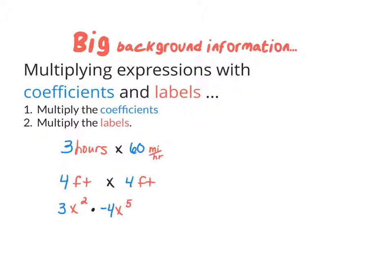Before we multiply things with radicals, let's remind ourselves how we multiply terms in general. Terms have coefficients and labels. When we multiply things, we multiply their coefficients and we multiply their labels. Compared to addition, where we don't change the labels, when we multiply, we do change the labels.